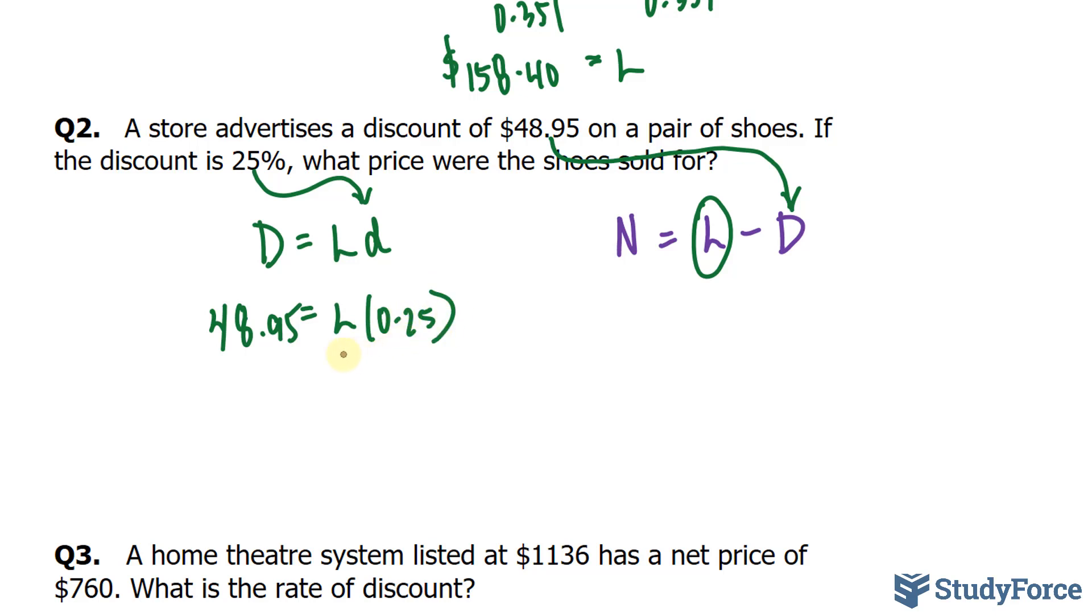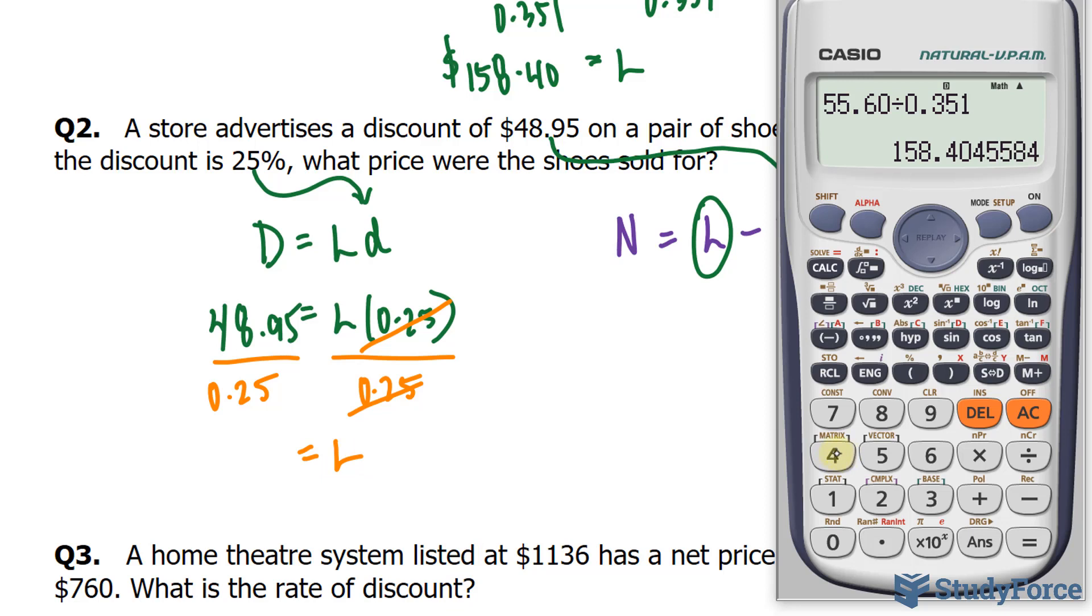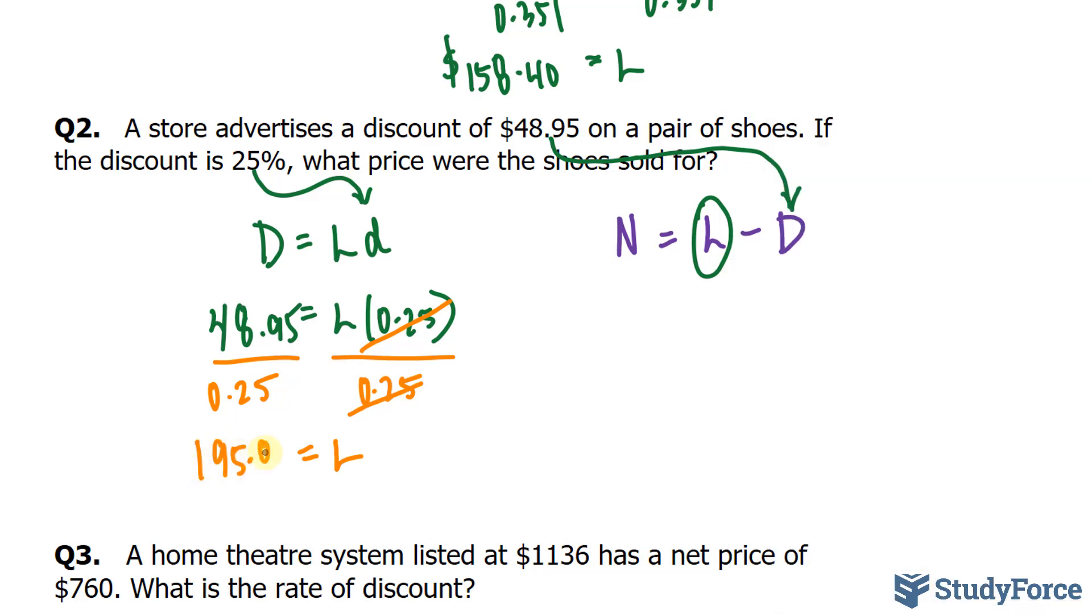Subsequently, if we divide both sides by 0.25, those cancel out, and we're left with what we get for L. So, 48.95 divided by 0.25, and we get our list price of $195.80.